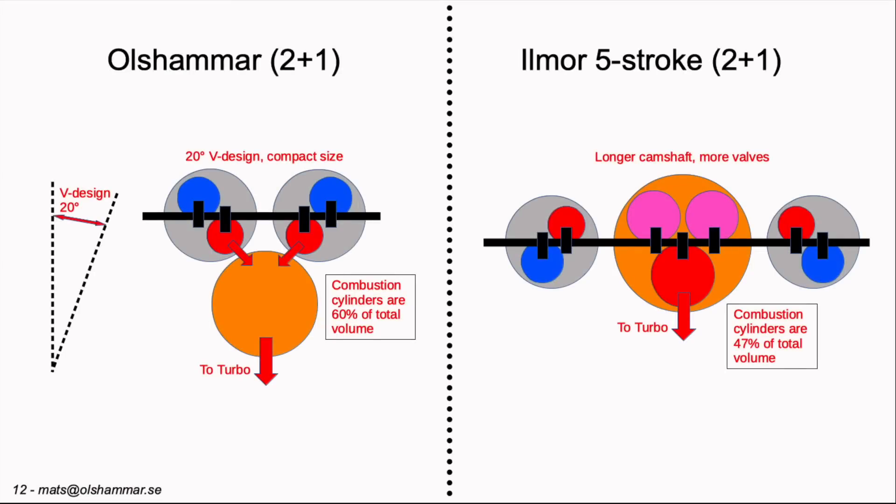Then comes the layout of them. During our computer simulations of the 2 plus 1 version we saw that a 20 degree V design would be quite beneficial. And we can place the exhaust cylinder on the side. We don't need any camshaft going over it. We don't need any valves. So we get a very short and compact engine with few valves.